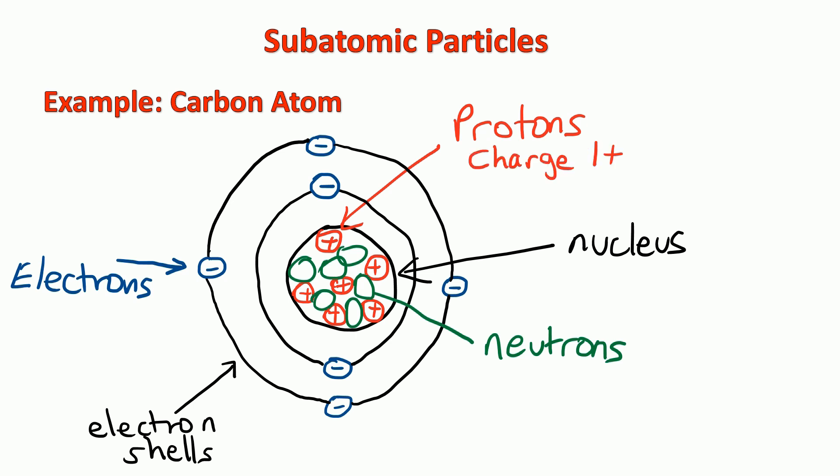Now we can see here that protons have a charge of 1+. Remember p for proton and p for plus or positive. Neutrons are neutral or no charge. The name suggests that neutrons are neutral. And electrons have a charge of 1-.